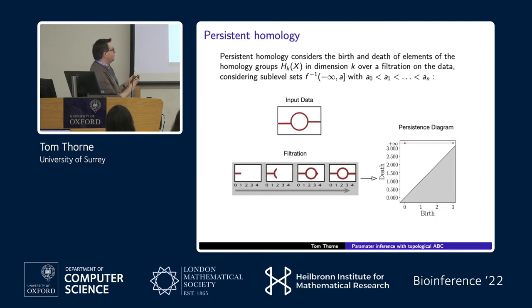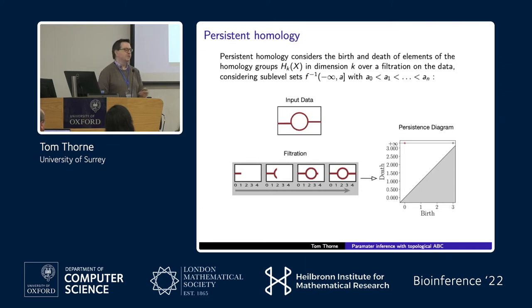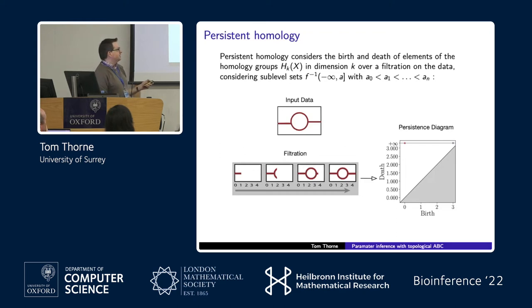In this example, we have one element in the homology group of dimension zero — a single connected component born at time zero — and then at roughly time three in the filtration we have our first dimension-one component, a loop, being born, and both persist to the end of the filtration. We can summarize this using something called a persistence diagram, which illustrates all topological features and their birth and death times. In this example, we have one feature in dimension zero born at time zero persisting indefinitely, and a loop born at time three also persisting indefinitely.